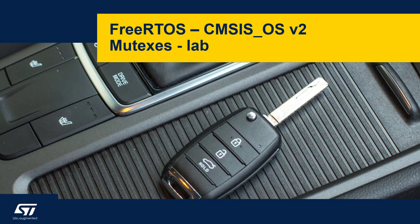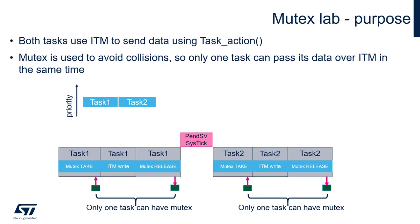Hello. In this part we will practice mutex access using CMSIS-OS version 2 and FreeRTOS. It's time to do some practice. We'll prepare a simple example where we will have two tasks, task 1 and task 2, with the same priority, and those tasks can send some messages over the ITM interface. We will use our task action function, which has been used in previous exercises. There will be three operations within each task function body.